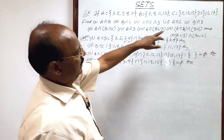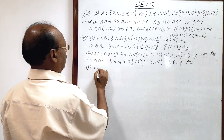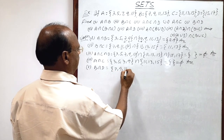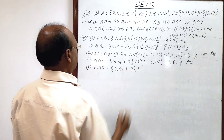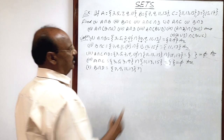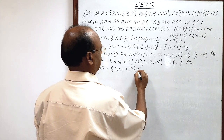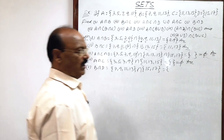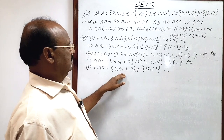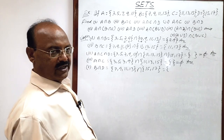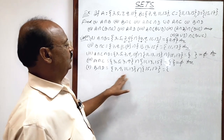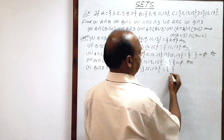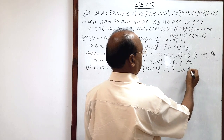Fifth part: B intersection D. Set B has elements 7, 9, 11, 13 and set D has elements 15 and 17. We collect common elements from these two sets. There is no element common in these two sets. So again this is a null set, denoted by phi (φ). This is the answer.